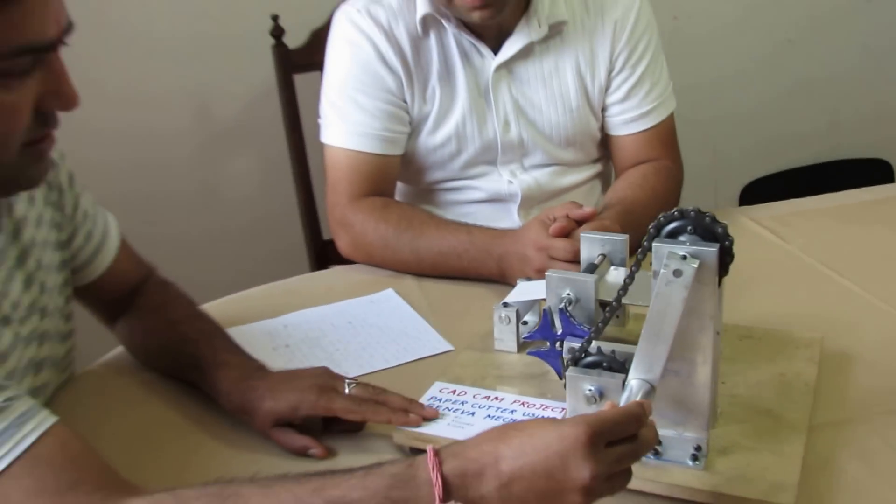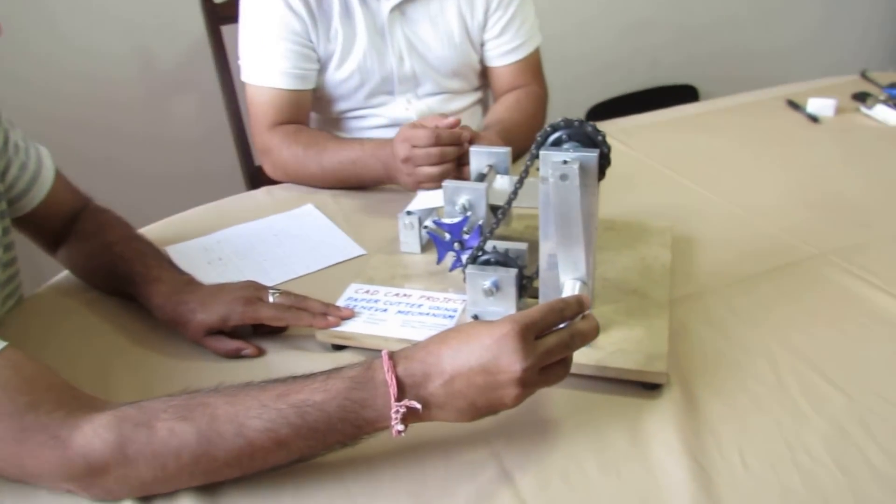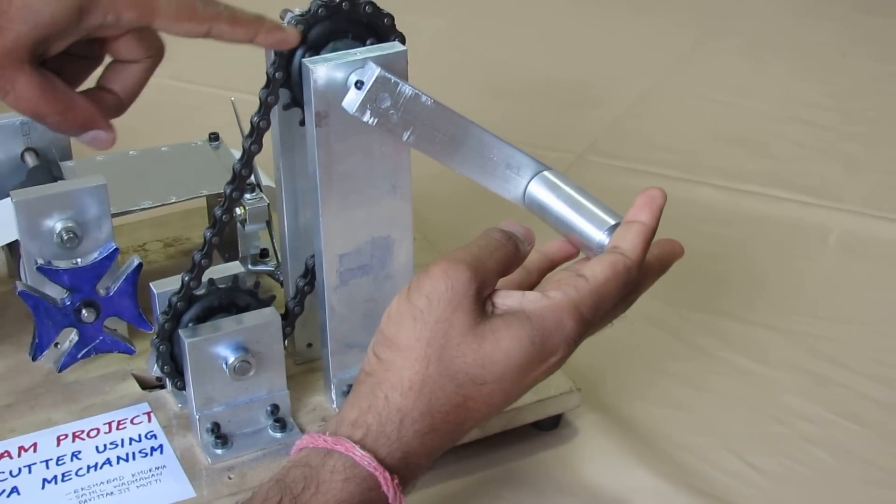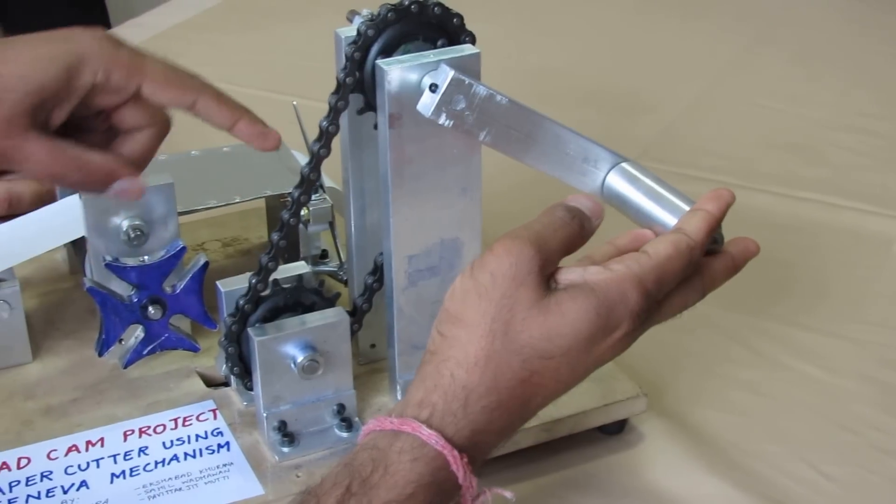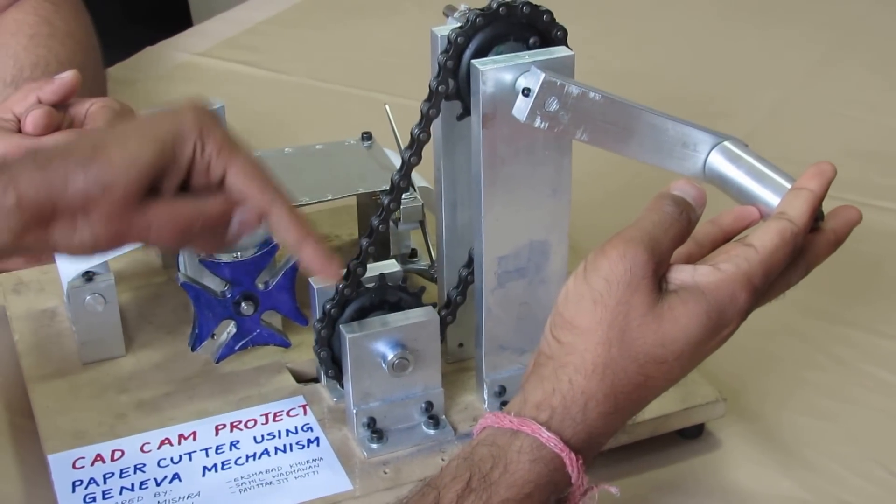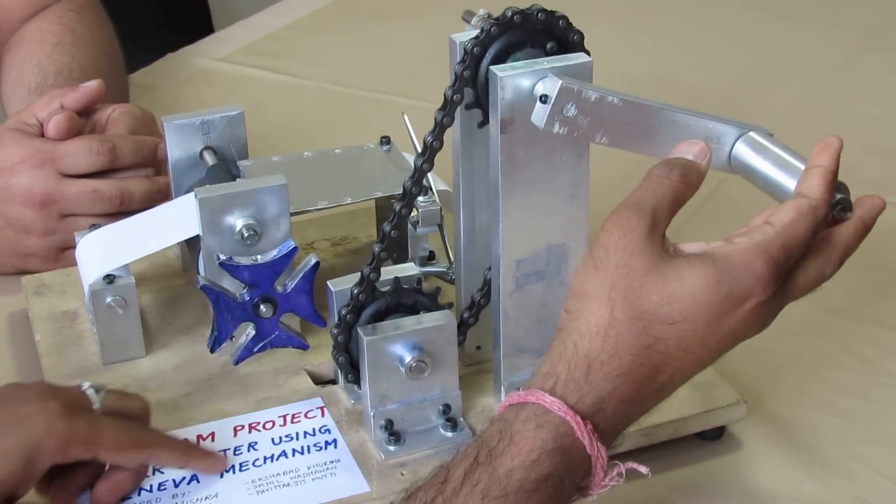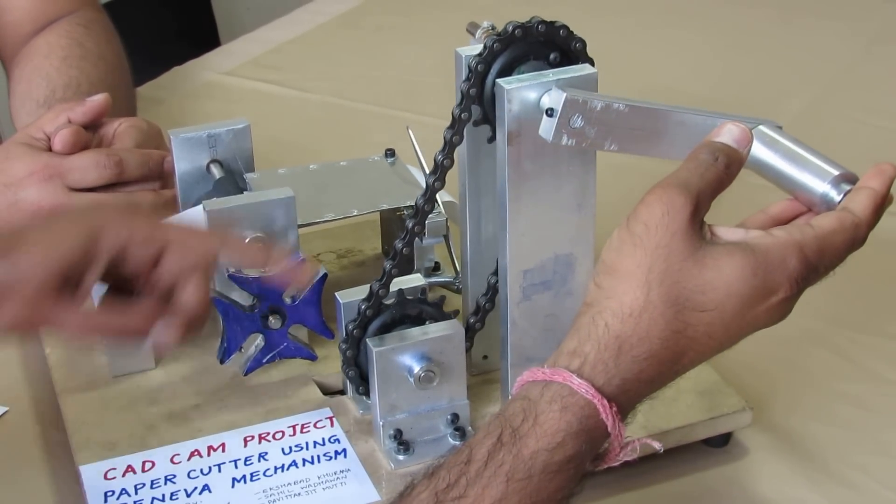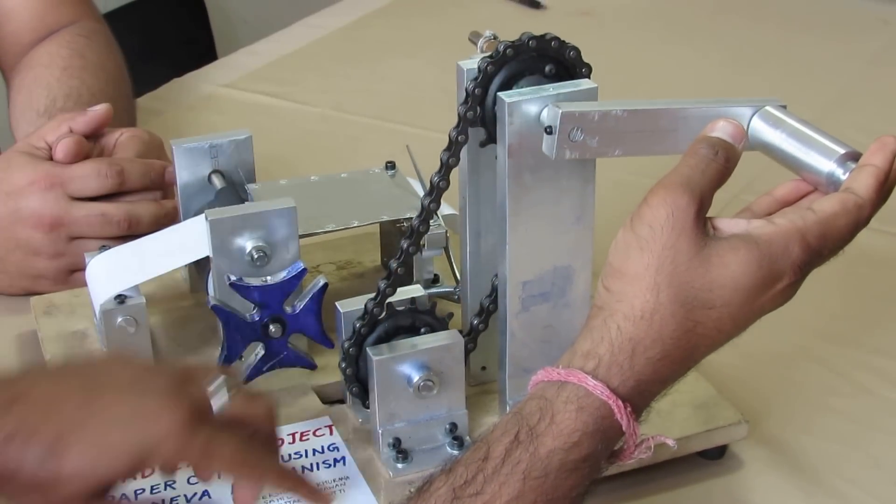So when we rotate this handle, this handle rotates the sprocket and the chain. We use the sprocket and the chain because there is no slippage between the motion of these two. And there is the synchronization of the motion between these two shafts.